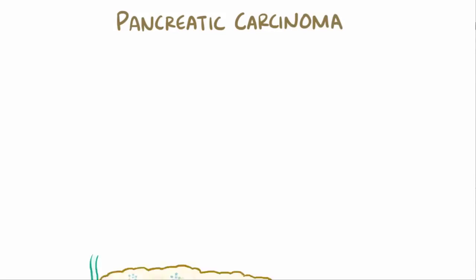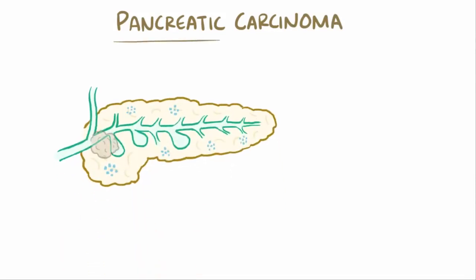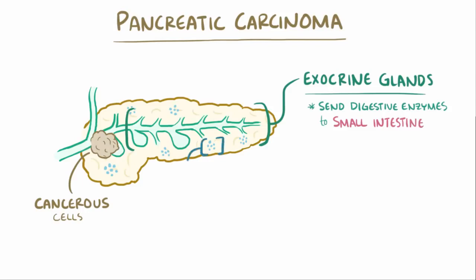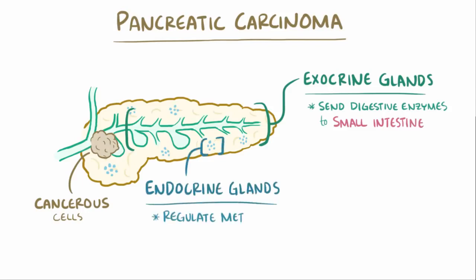Pancreatic carcinoma describes cancerous cells arising in the pancreas. A healthy pancreas has two types of glands: exocrine glands, which send digestive enzymes to the small intestine, and endocrine glands, which help regulate metabolism in the body — for example, maintaining normal blood sugar.